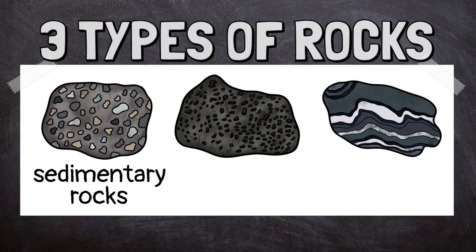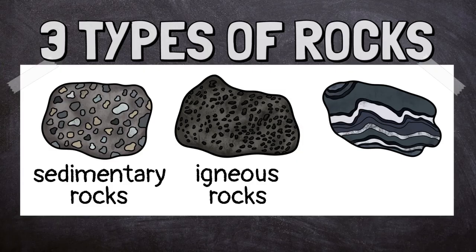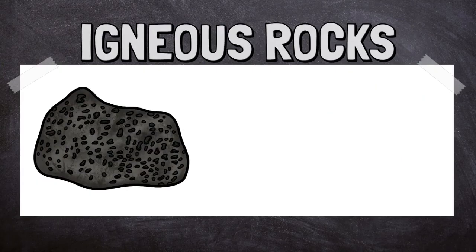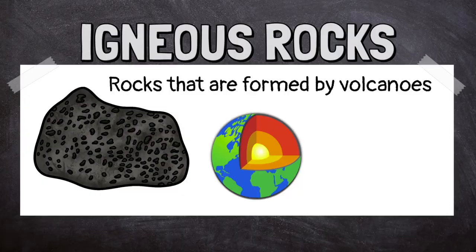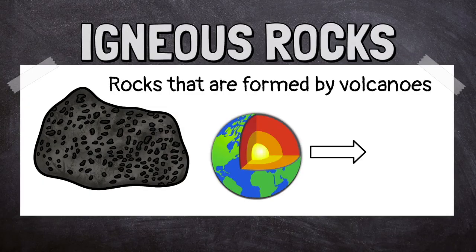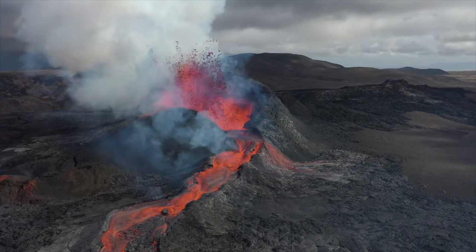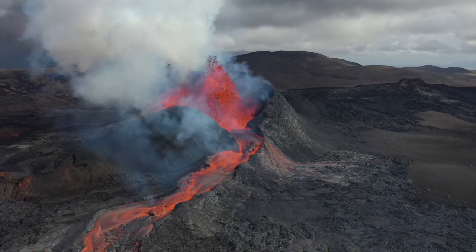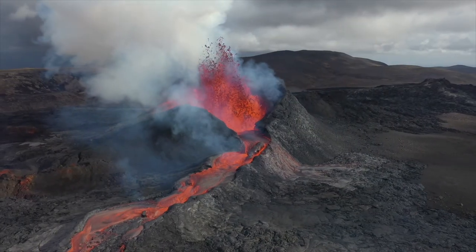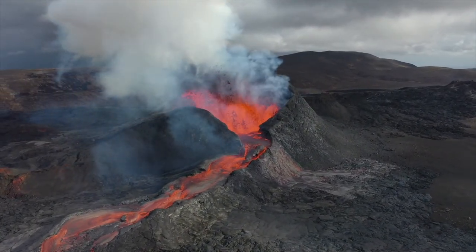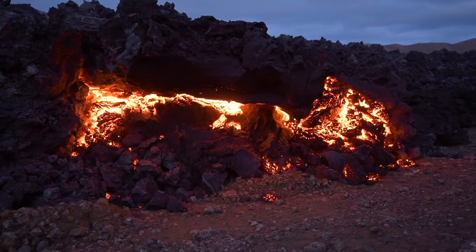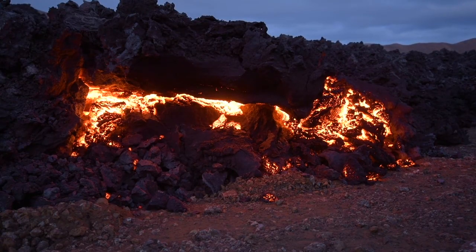Rocks that are formed by volcanoes are called igneous rocks. These rocks form when other rocks melt deep inside the earth, creating magma. These melted rocks are forced to the surface and erupt out of volcanoes. When magma reaches the surface, it's called lava. The lava cools and hardens to form an igneous rock.